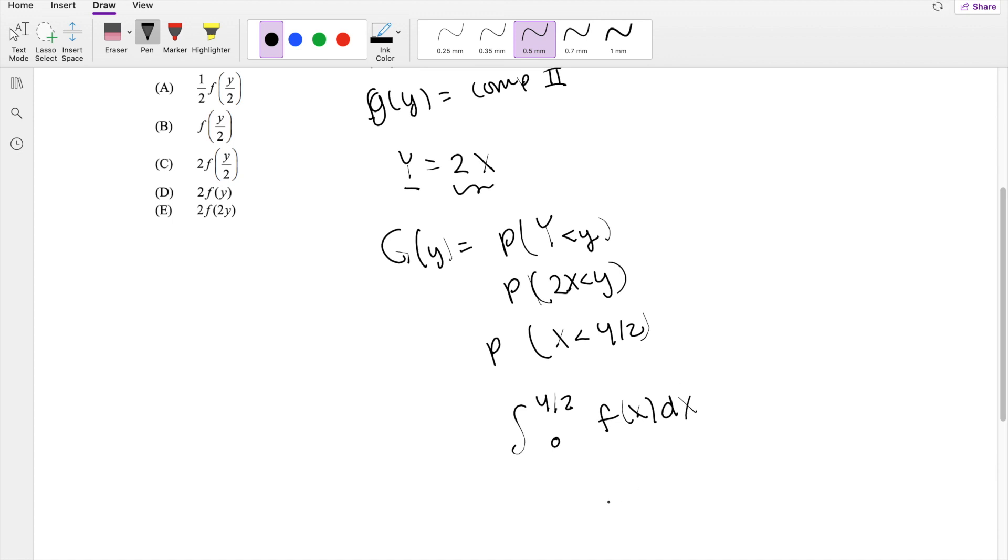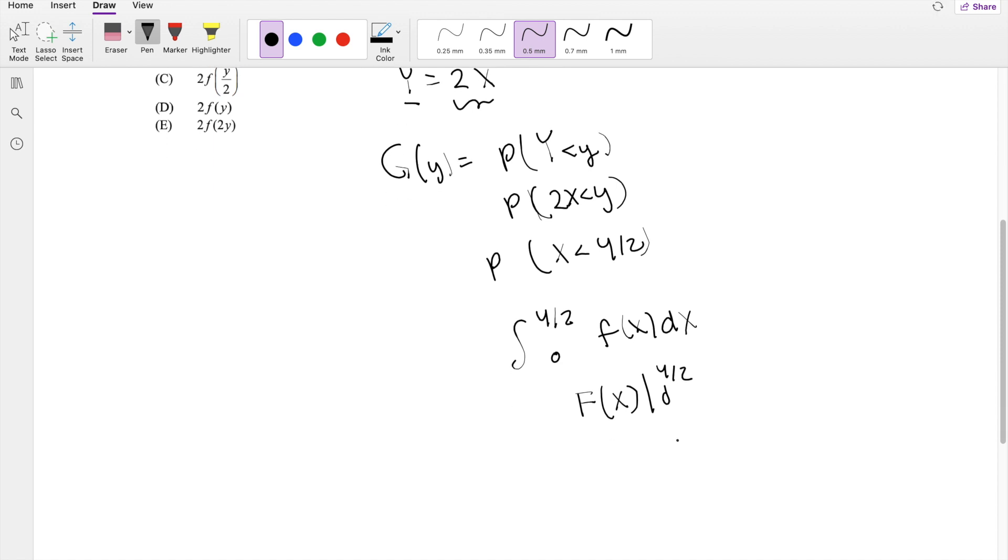So when we integrate this, this just becomes big F of X, integrating from 0 to Y over 2. Plugging in the upper limit, you get F of Y over 2. But the thing is, we're looking for little g of Y.